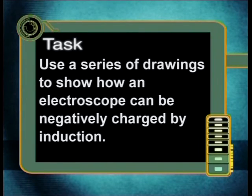And there you have it. I have shown you how an electroscope can become positively charged using a negatively charged comb by way of induction. Now, for your task for today: use a series of drawings to show how an electroscope can be negatively charged by induction. One last thought — when I charged the electroscope by induction, it was connected to the Earth with an electrical conductor. We call this earthing an object.